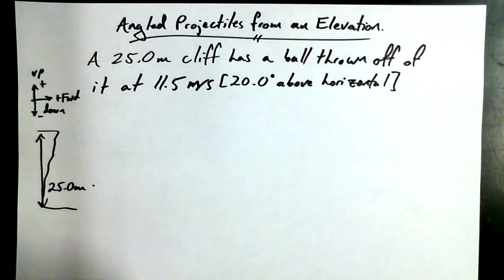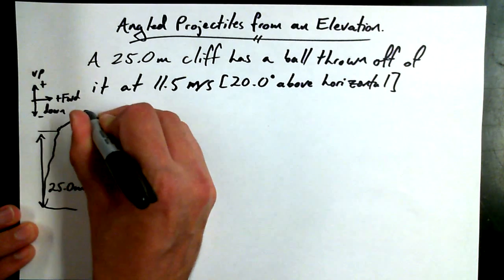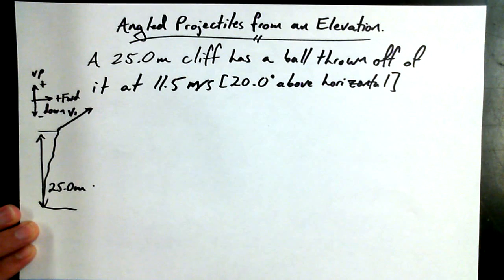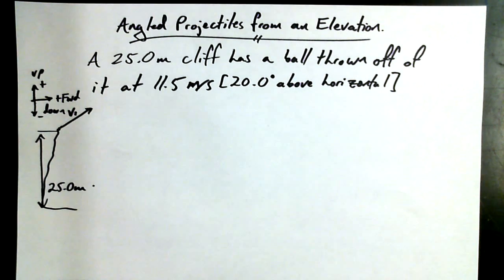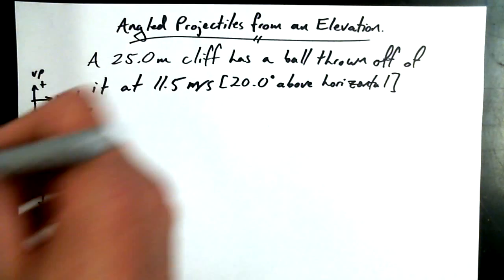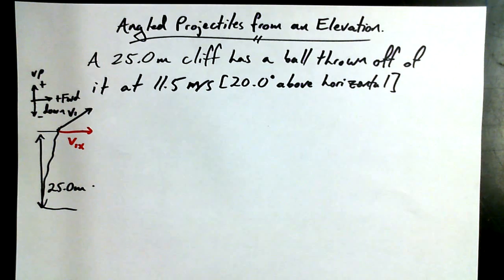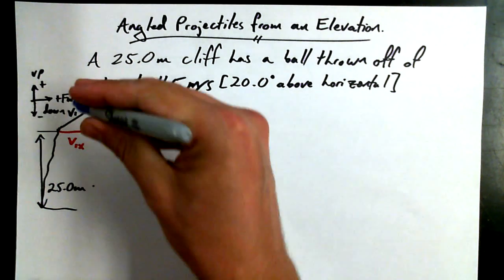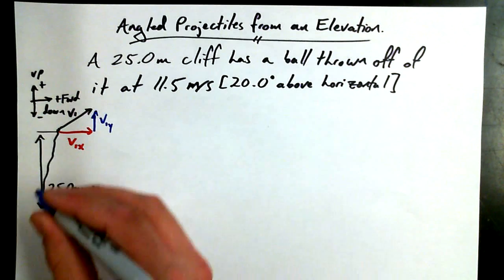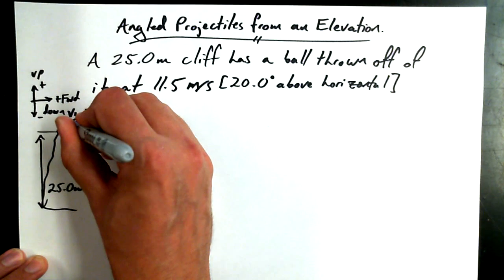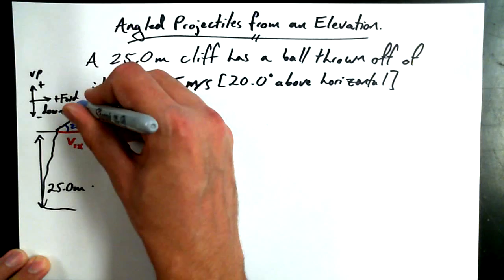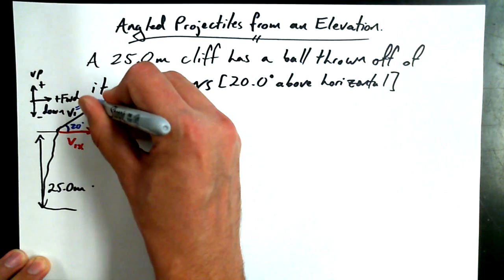And we're going to draw in our vector, our launch vector. I'm going to call it V1, and of course we're going to have to identify our V1x and our V1y. And then we happen to know that this angle, this interior angle relative to the horizontal is 20 degrees, and V1 is equal to 11.5 meters per second.